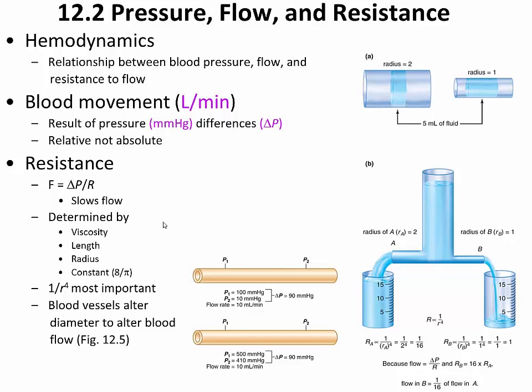Resistance is determined by four factors. First, viscosity — blood viscosity can vary slightly, and in extreme dehydration it increases and can cause severe physiological problems, but in normal physiology it remains constant. Second, the overall length of blood vessels, which does not change. Third, the constant 8 over pi, which obviously does not change. That leaves us with one final factor: radius.